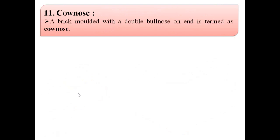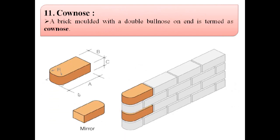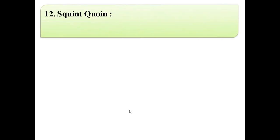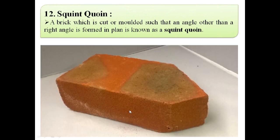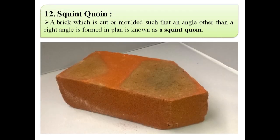The next term is cow nose. A brick moulded with a double bullnose on end, as shown in this image, is known as a cow nose. In this wall there is provided cow nose. The next term is squint quoin — a brick which is cut or moulded such that an angle other than a right angle is formed in plan, as shown in this image, is known as a squint quoin.